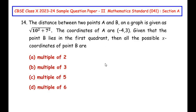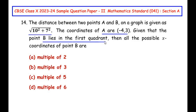This question is from the coordinate geometry chapter. The distance between two points A and B on a graph is given as square root of 10² plus 7². The coordinates of A are (-4, 3). Given that point B lies in the first quadrant, we need to find all the possible X coordinates of point B.